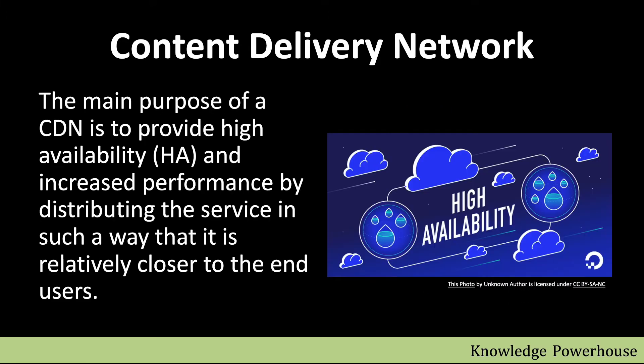The main purpose of a CDN is to provide high availability and increased performance. Performance is improved because content is served from the nearest node. High availability is achieved because content is replicated across multiple regions — so even if the source goes down, nearby regional nodes remain up and can still deliver the content.